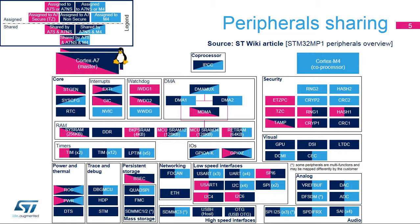...that a user choice is needed to assign the peripheral to a given context, depending on its application needs. This assignment can either be done with the STM32CubeMX tool or manually, and it is reinforced by hardware isolation for the Cortex-A7 Secure and for the Cortex-M4.